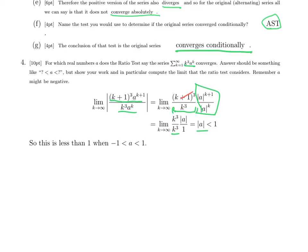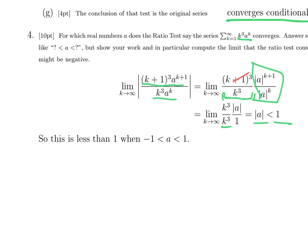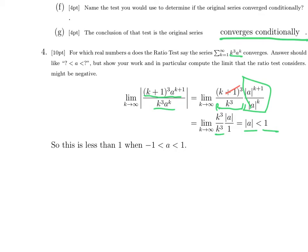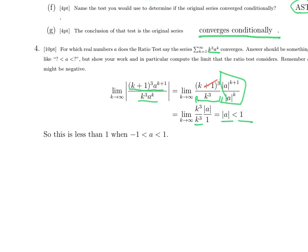The ratio test tells us this converges whenever that quantity is less than 1. So it converges when absolute value of a is less than 1, which is the same as when -1 is less than a is less than 1. I only asked you what the ratio test told you, so you don't have to check what happens when a equals 1 and -1. The ratio test does not tell you anything there.